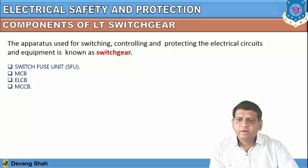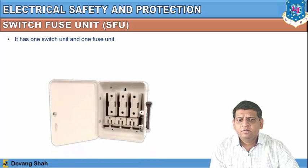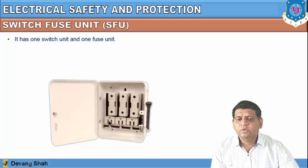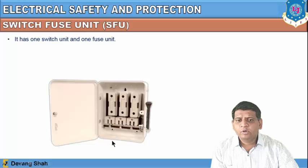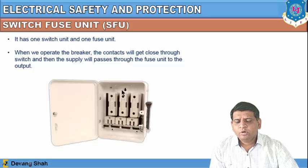The components of LT switchgear include switch fuse unit (SFU), MCB, ELCB and MCCB. The switch fuse unit is a combination of one switch unit and one fuse unit. The line coming from outside goes to the switch and then to the fuse system. When we operate the breaker, the contacts close through the switch and supply passes through the fuse unit to the output, protecting the output circuitry.